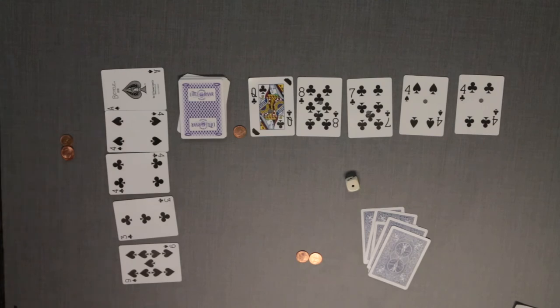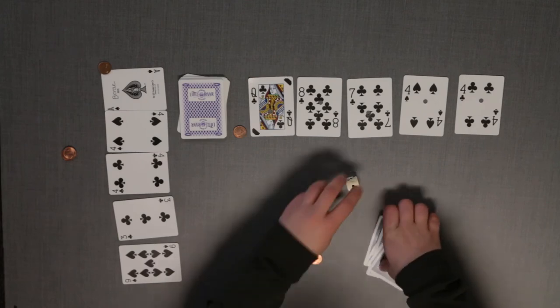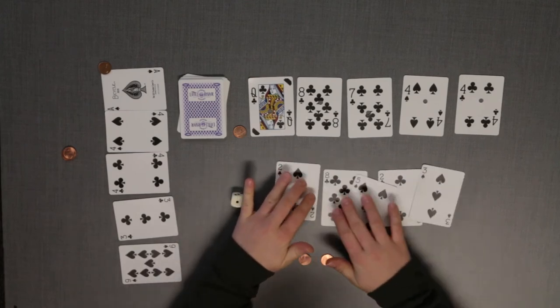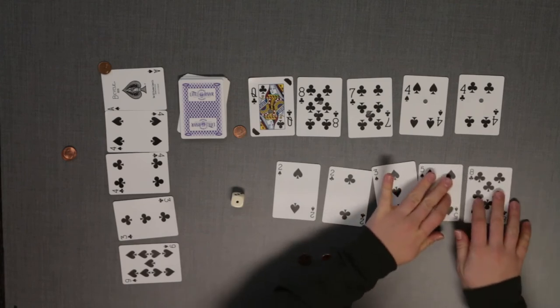Players may choose where they would like to place the chip in their own numbers. The player with the number closest to the target number wins the round. That player collects one penny or chip from each of the other players.